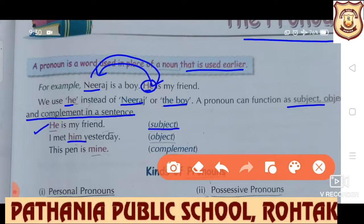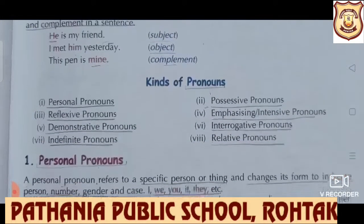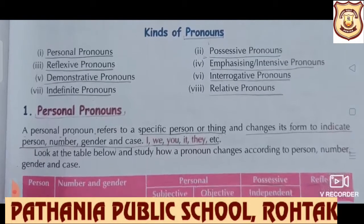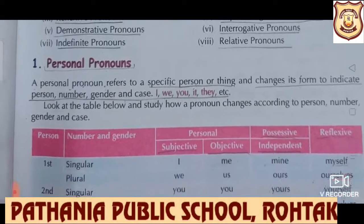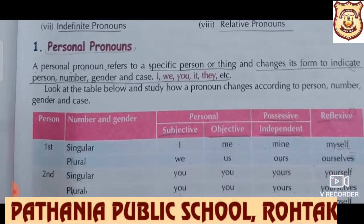I met him yesterday — 'him' is the object. This pen is mine — that is a complement. We have a total of eight kinds of pronoun and surely we are going to discuss all of them one by one. The very first is personal pronoun. A personal pronoun refers to a specific person or thing and changes its form to indicate person, number, gender, and case. Like I, we, you, it, they, etc.